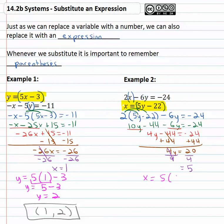Five y, y is 5 minus 22, and use order of operations to solve. 5 times 5 is 25 minus 22, and 25 minus 22 is 3.